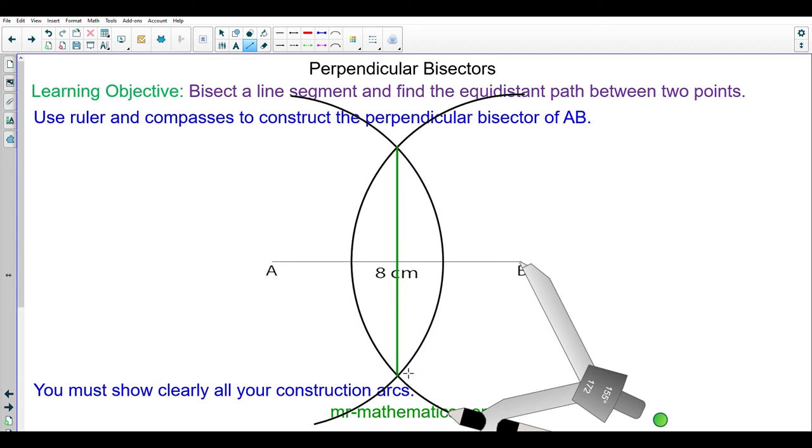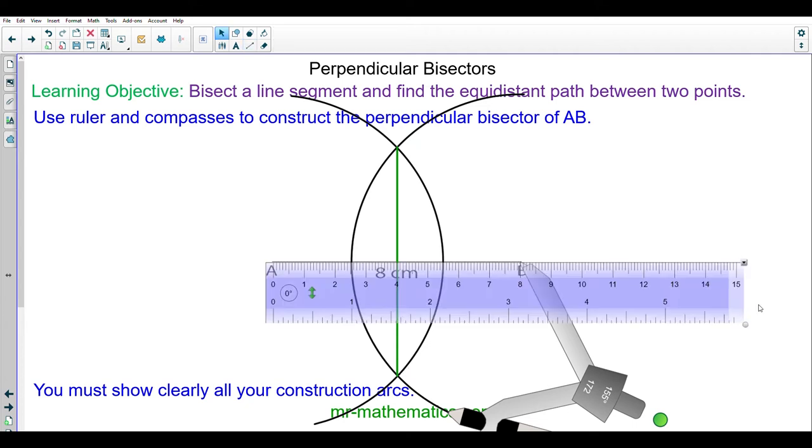You can see I've created a perfectly perpendicular line that intersects the line AB exactly halfway. We can check this using a ruler so you can see our perpendicular bisector the green line that's exactly four centimeters.